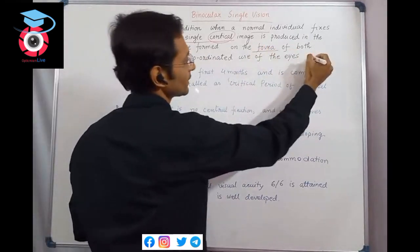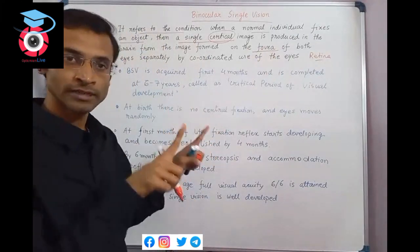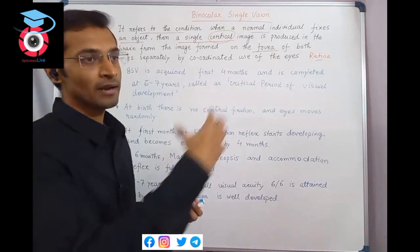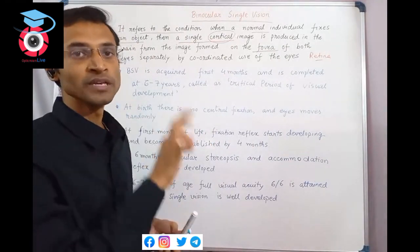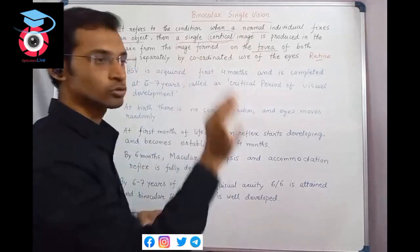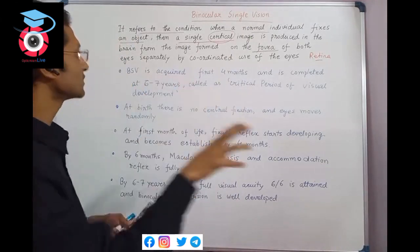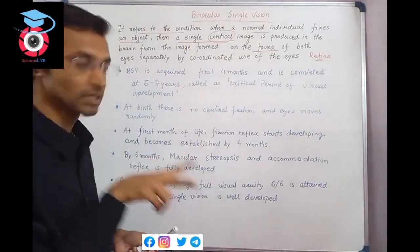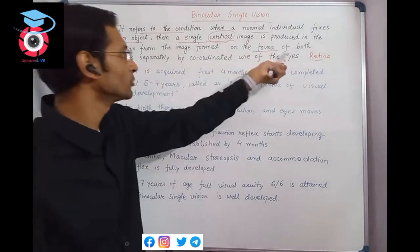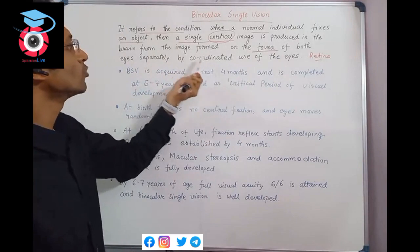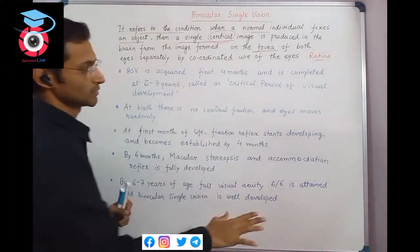What is the fovea? The fovea is part of the retina - fovea centralis is called the small fovea. Parallel rays of light coming from infinity are focused on the retina, specifically on the fovea centralis. A single cortical image is produced in the brain from the image formed on the fovea of both eyes separately, by the coordinate use of both eyes. Binocular single vision is acquired in the first four months.